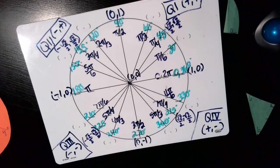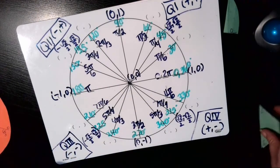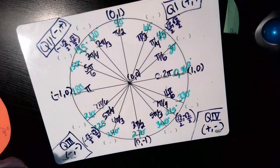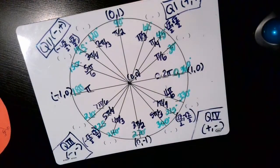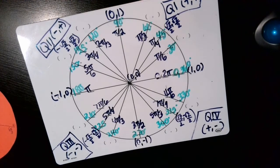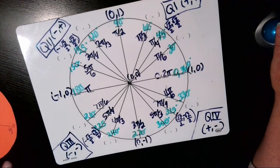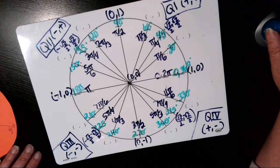I'm going to stop there with pi over four for this video, and then we'll do the next layer — the orange with the pi over three denominators — in the fourth recording.